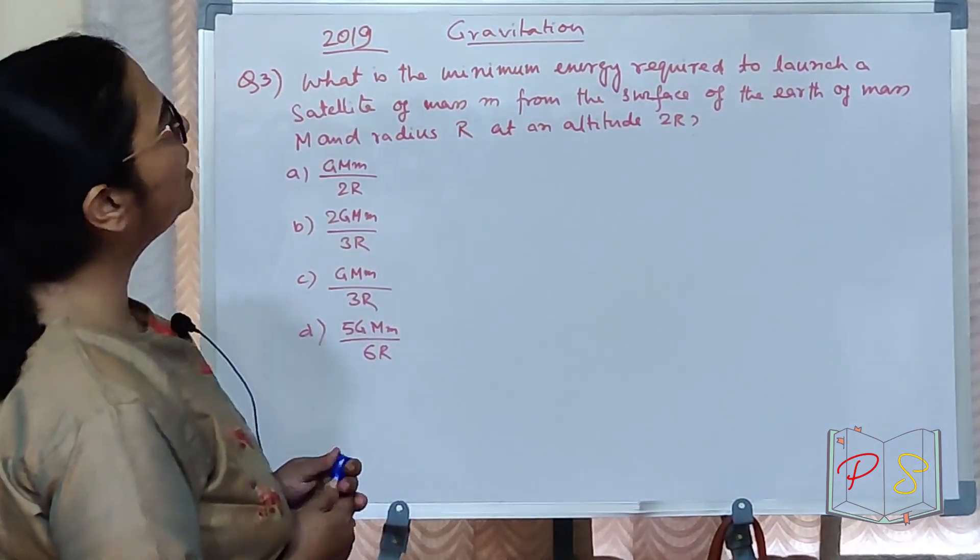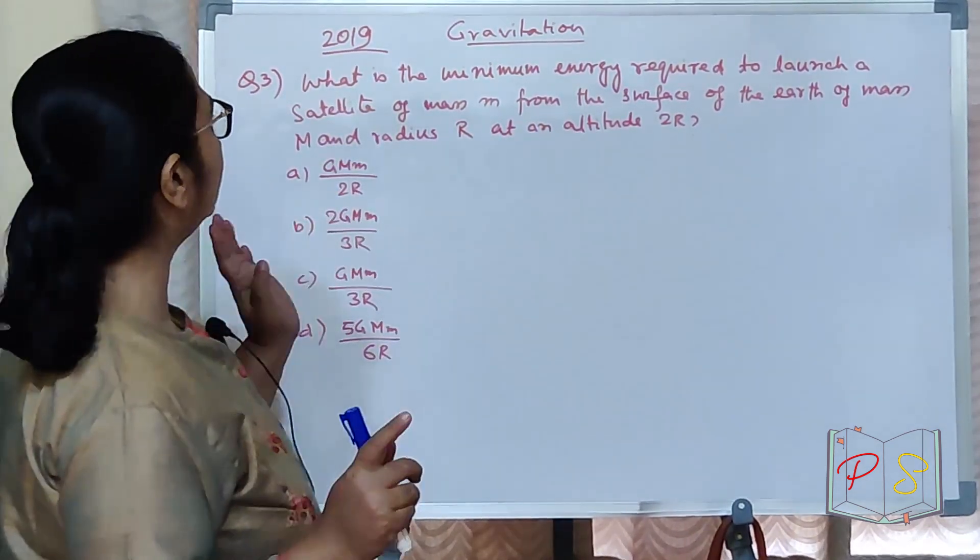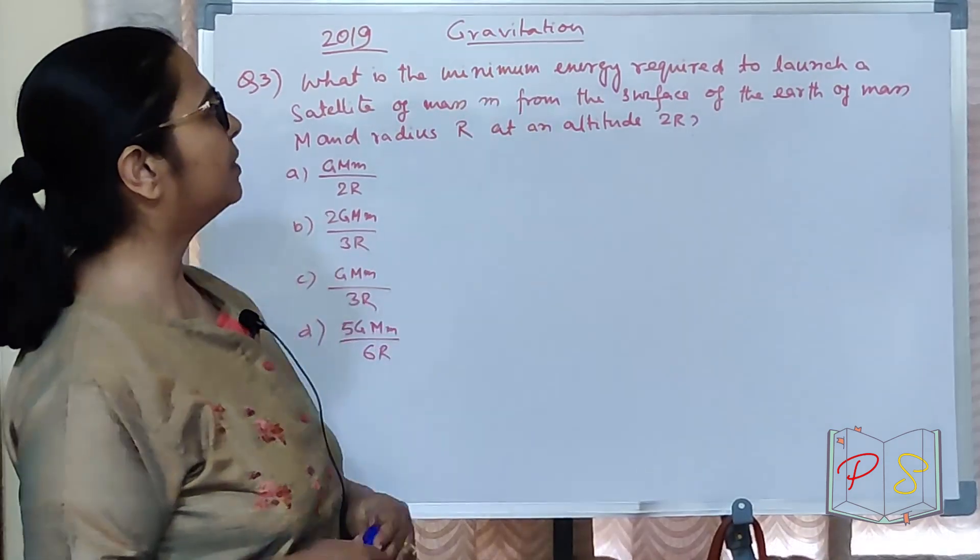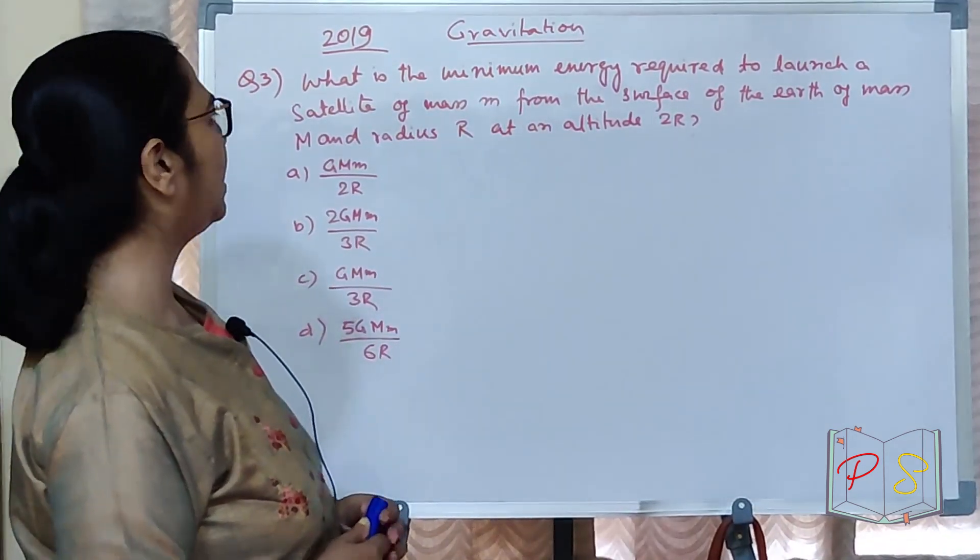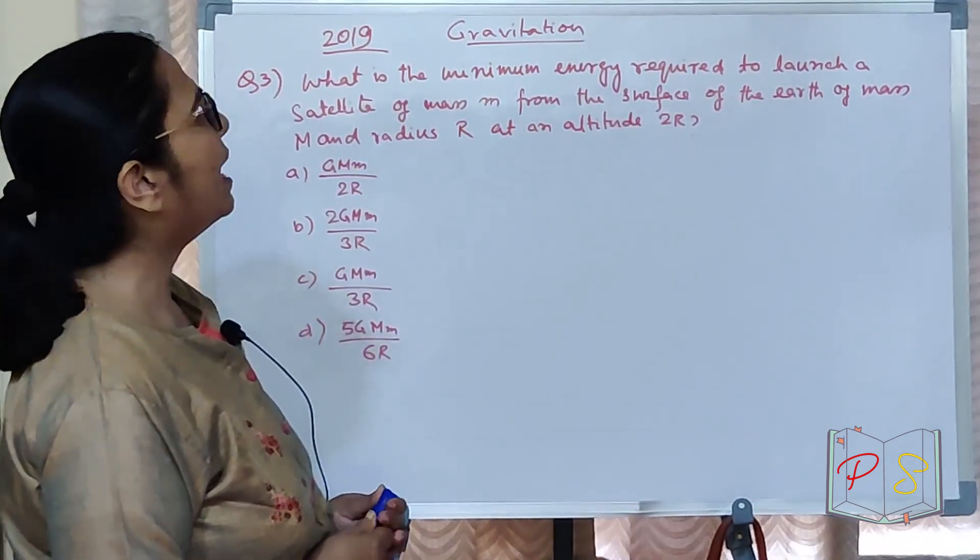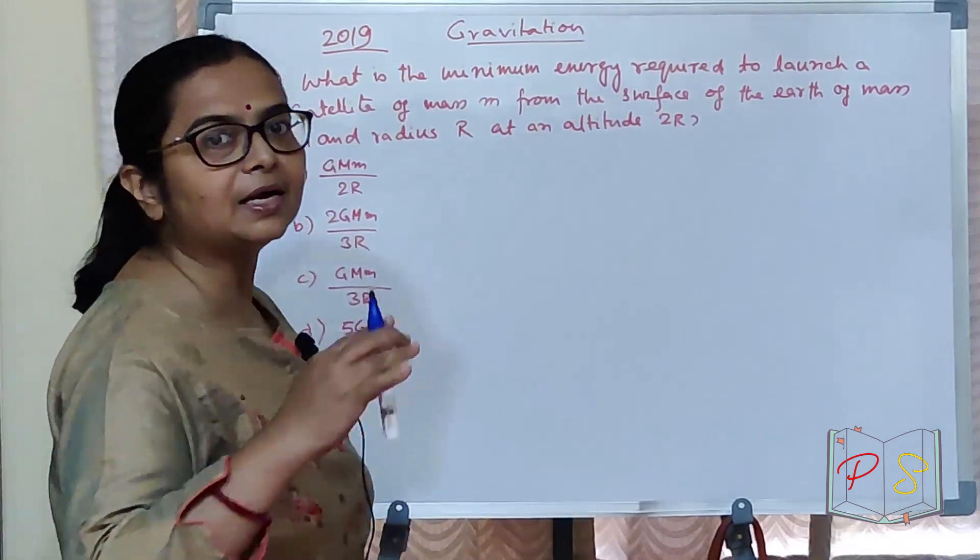What is the minimum energy required to launch a satellite of mass m from the surface of the earth of mass capital M and radius capital R at an altitude of 2R?